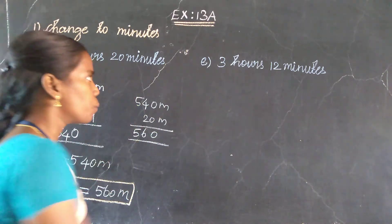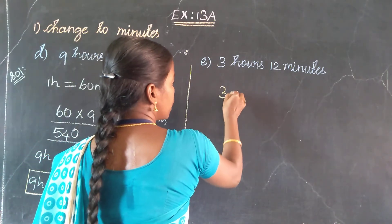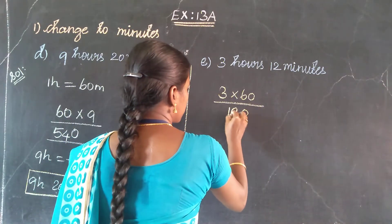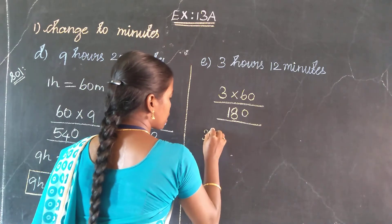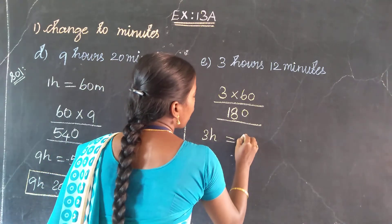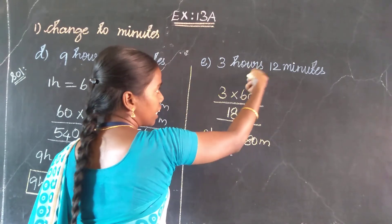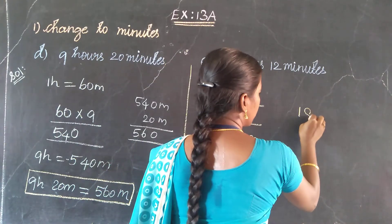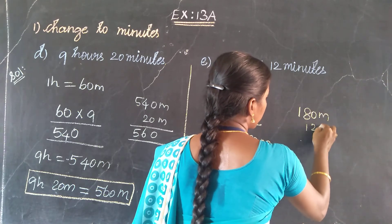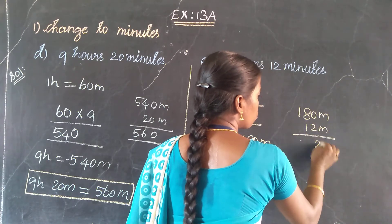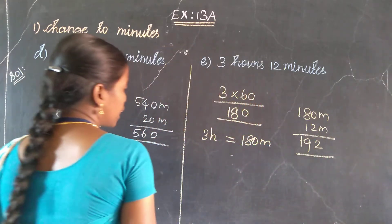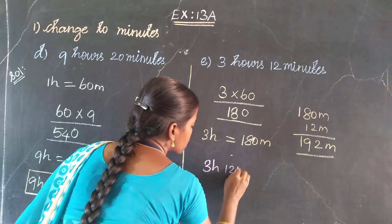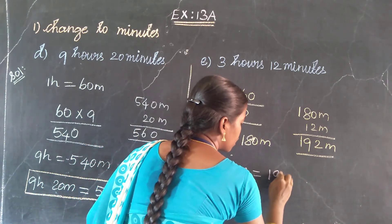Then next problem, same method. 3 hours: 3 into 60 — 6 threes are 18, so 3 hours is equal to 180 minutes. Already then 12 minutes — in hours, change done. 180 minutes and 12 minutes: add — 0 plus 2 is 2, 8 plus 1 is 9, 1. So, 3 hours 12 minutes which is equal to 192 minutes.